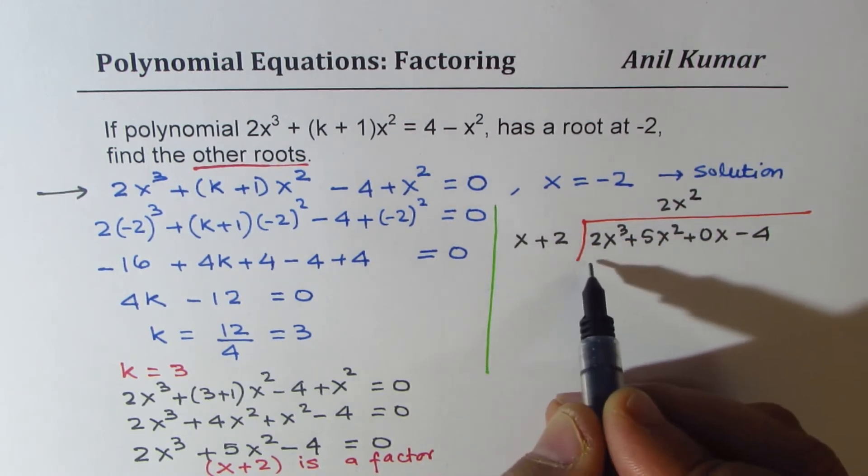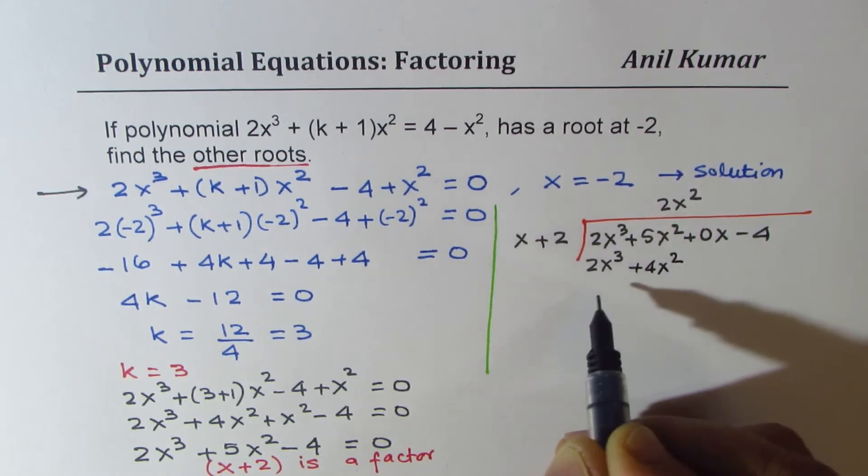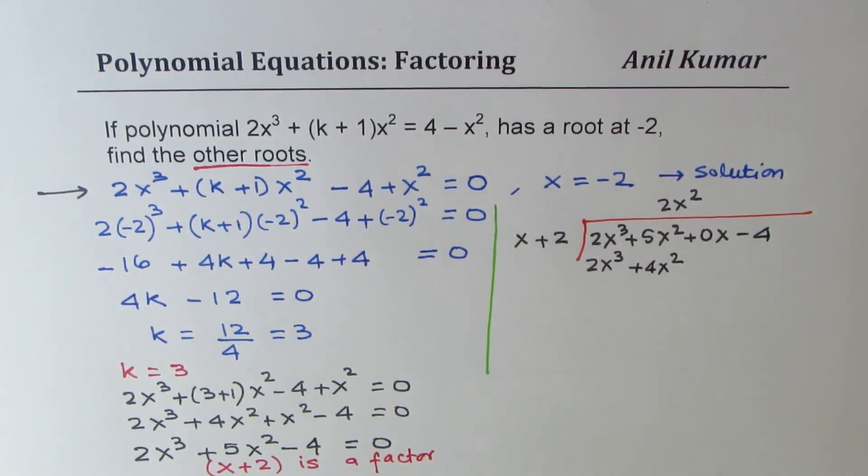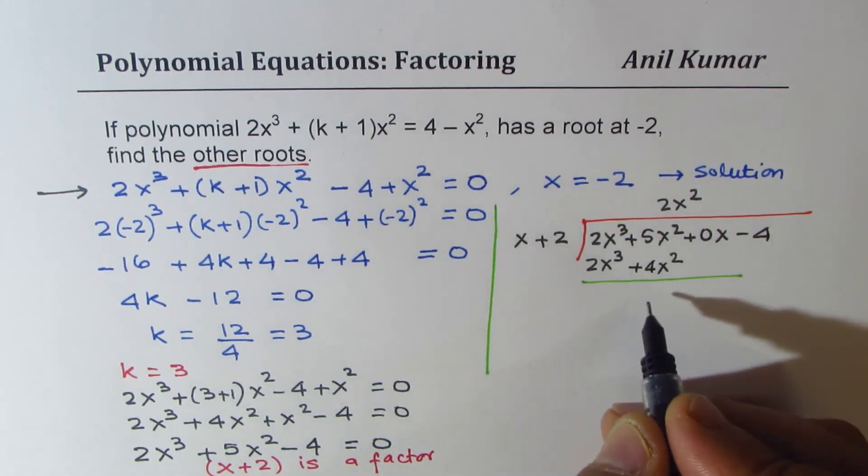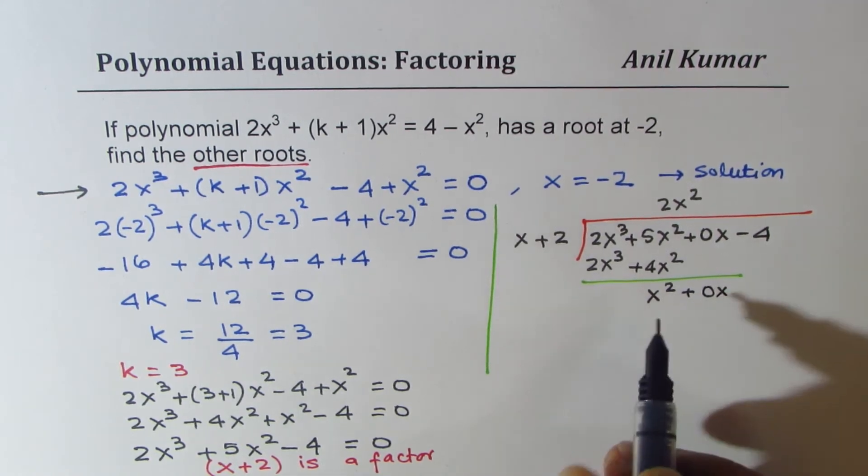So when you multiply, you get 2x³ + 4x². Now, when you take away and bring down the next term, you get x² + 0x.